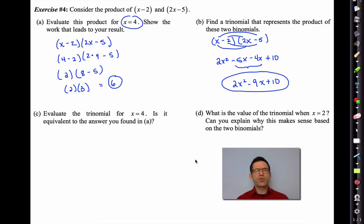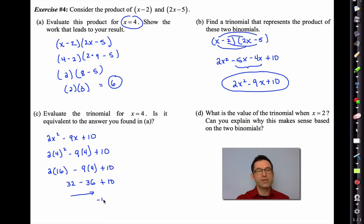Letter C says evaluate the trinomial for x equals 4. Is it equivalent to the answer you found in A? I don't know. Let's take a look. Let's see if it's equivalent. So I'm going to take this trinomial, 2x² - 9x + 10. And I'm going to put a 4 in for it. Let's see what we get. Again, let's try to do as much of this without a calculator as we can, just to get practice on our mental arithmetic. Order of operations says I've got to square that 4 first. Then 2 times 16 is 32. 9 times 4 is 36. A little bit tricky here. Be careful now. 32 minus 36 is -4. And -4 plus 10 is 6. Yep.